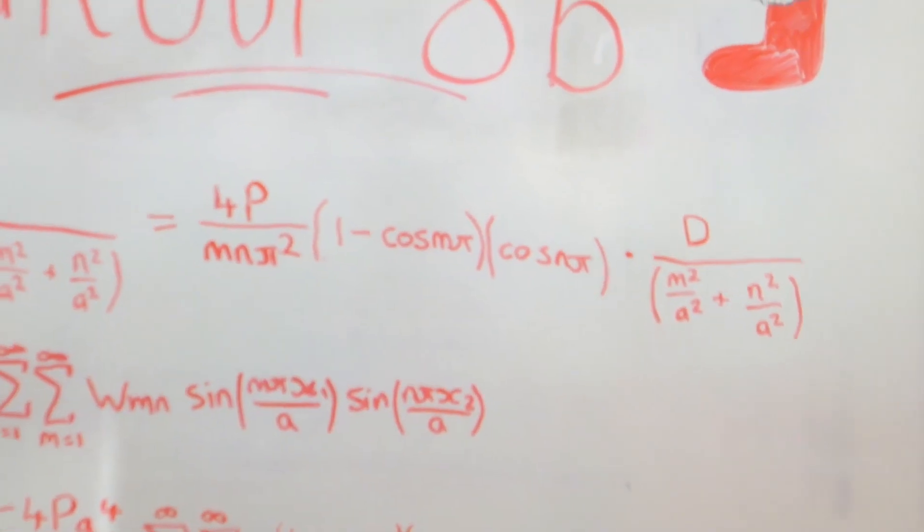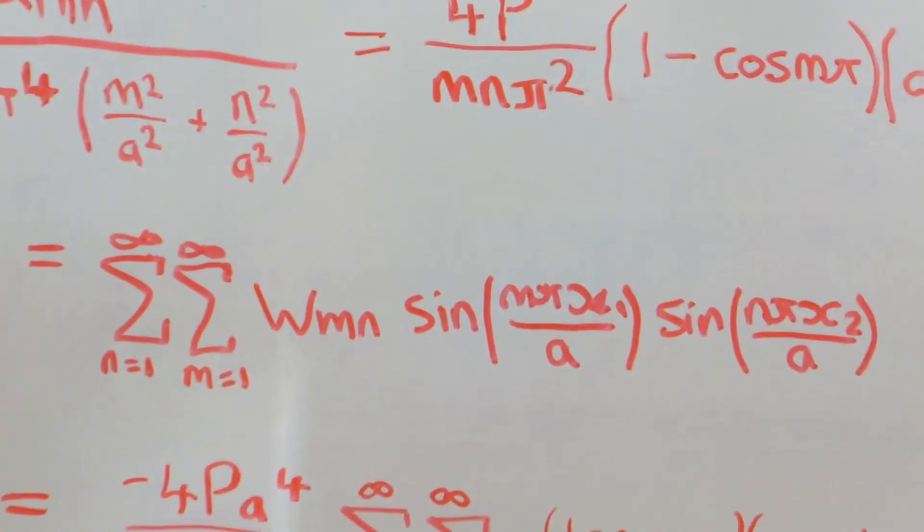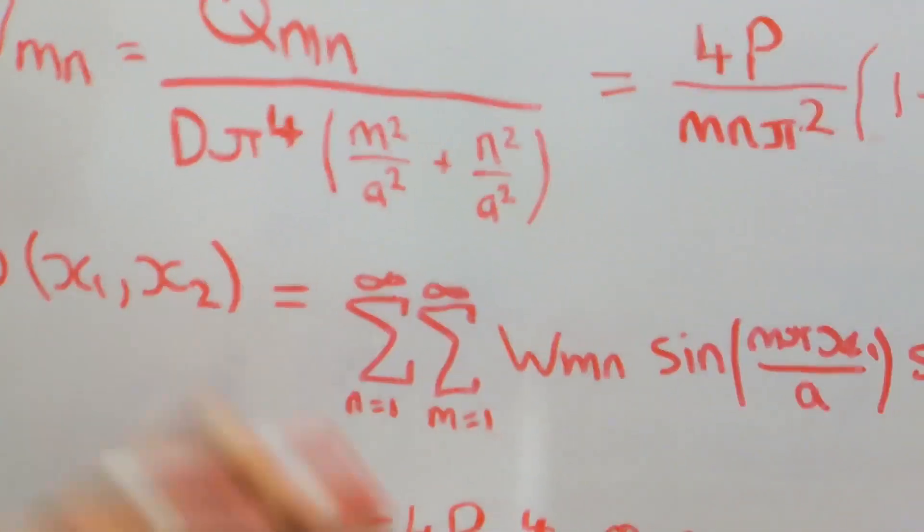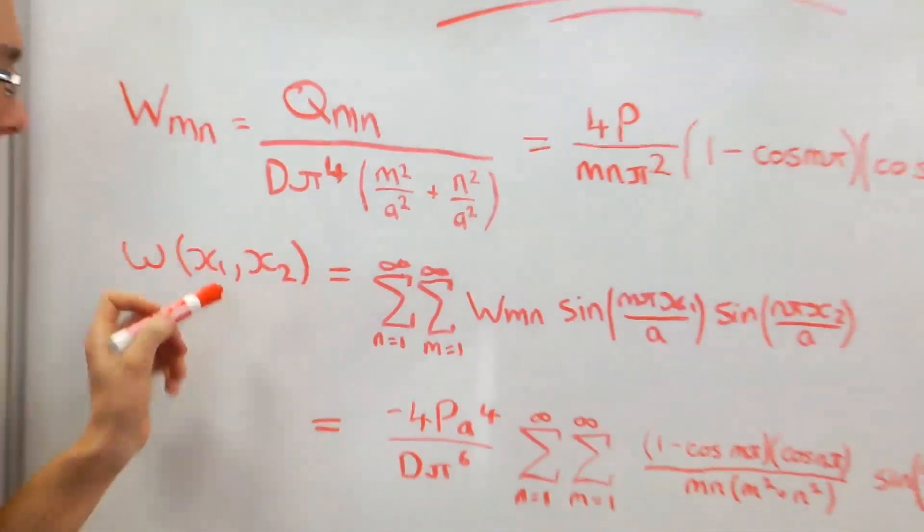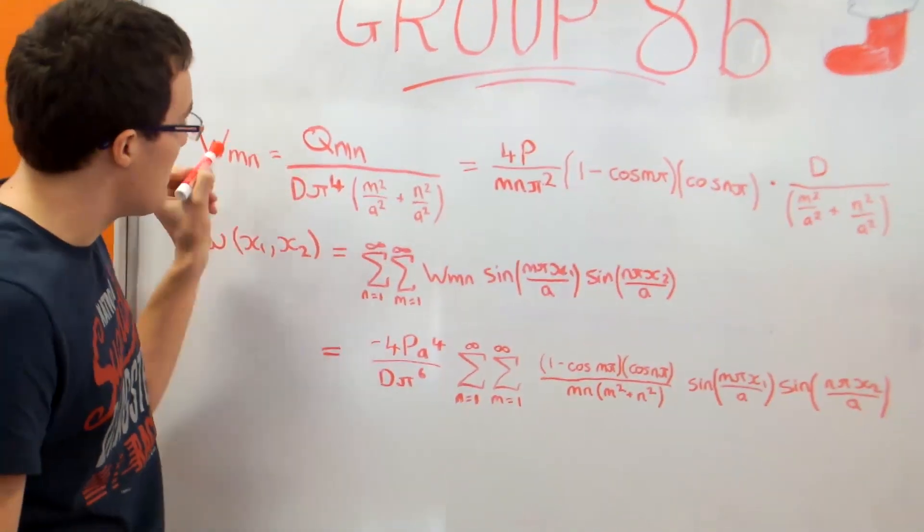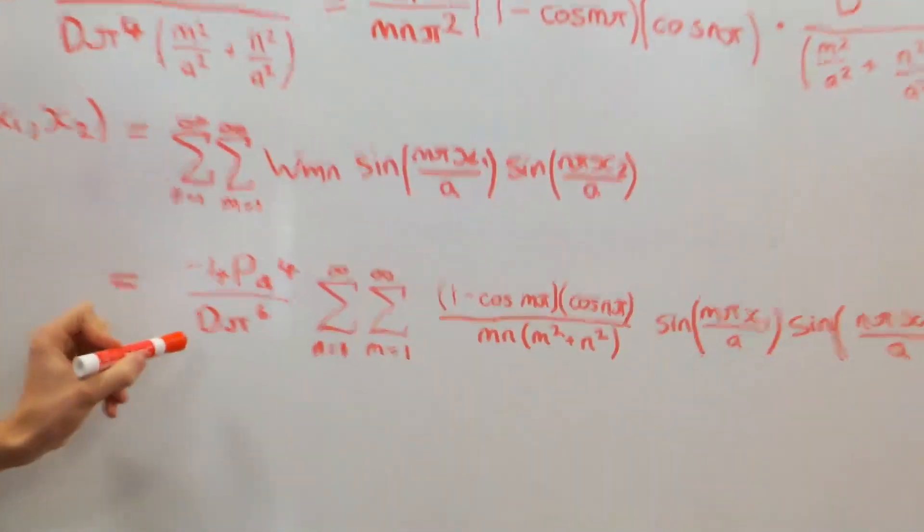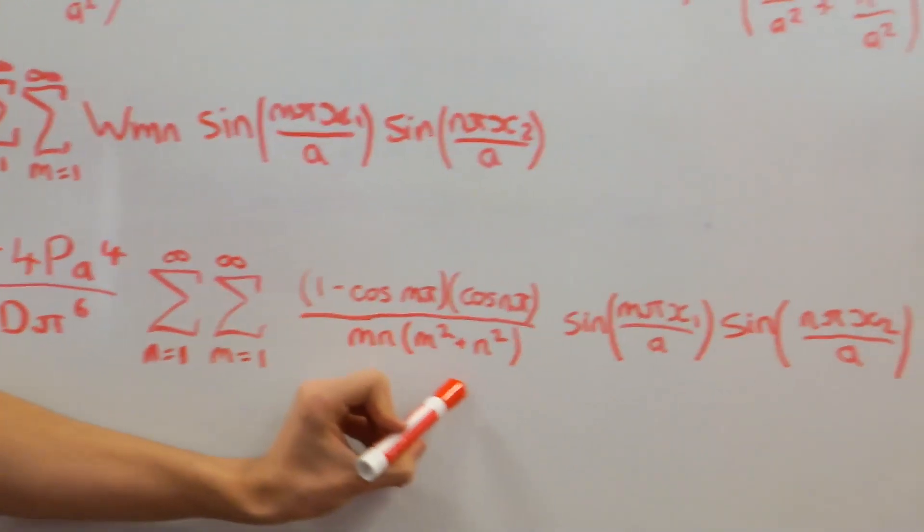Now, this Wmn is actually the coefficient for this double Fourier series here, which will give us the displacement function. So that tells us how much the plate is displaced at any position x1 and x2. So now, just substituting in this Wmn into here, and then grouping all the constants outside, we're left with this double summation here, which gives us our W function.